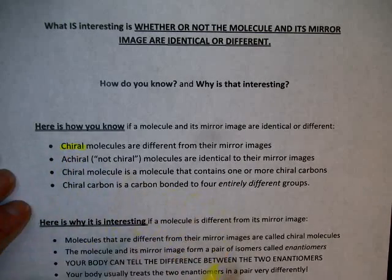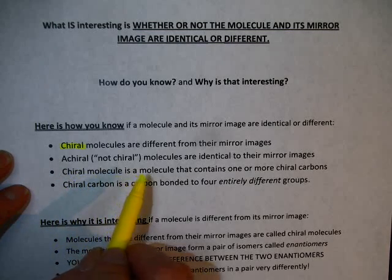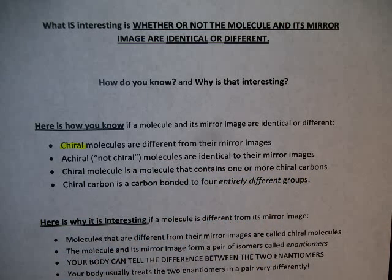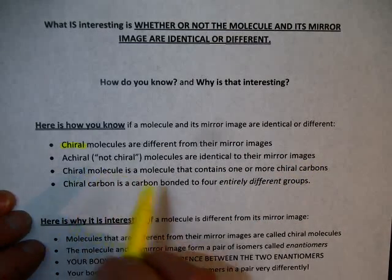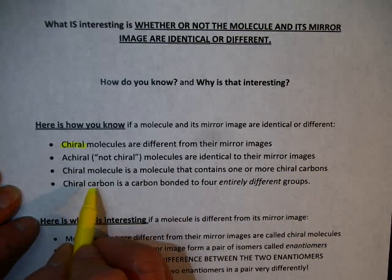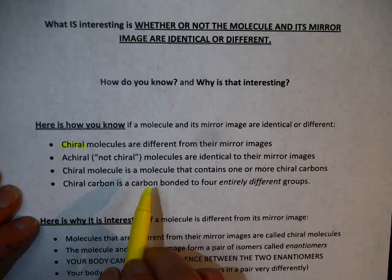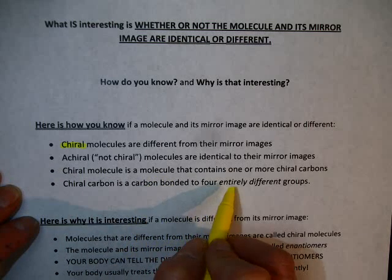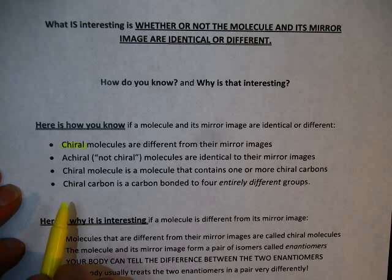A chiral molecule is a molecule that has a chiral carbon. If you find at least one chiral carbon in a molecule, that makes the whole molecule chiral. A chiral carbon is a carbon bonded to four totally different groups. Carbon always has four bonds — if all four groups are different from each other, that's a chiral carbon. We'll see in the next video how to figure that out.